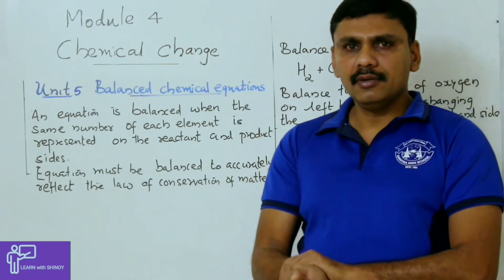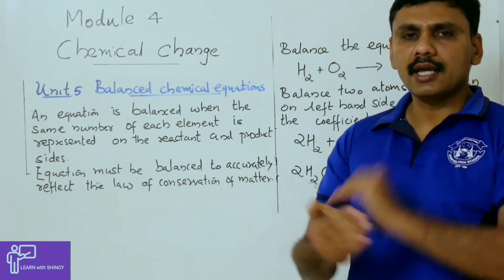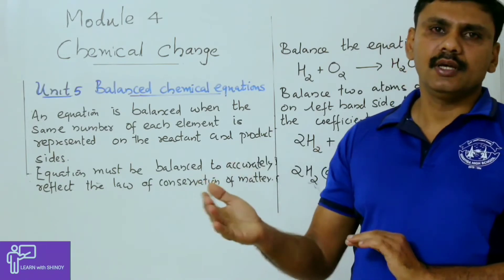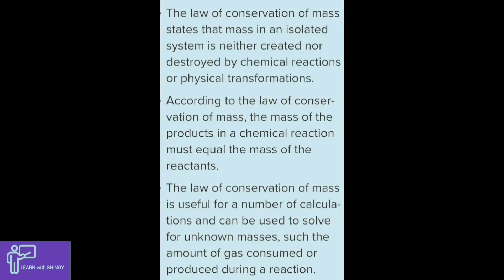When the chemical equation is balanced, the total mass of the elements in the reactant side will be equal to the total mass of the elements in the product side. The law of conservation of mass states that mass in an isolated system is neither created nor destroyed by chemical reactions or physical transformations. Therefore, the mass of the products in a chemical reaction must equal the mass of the reactants.